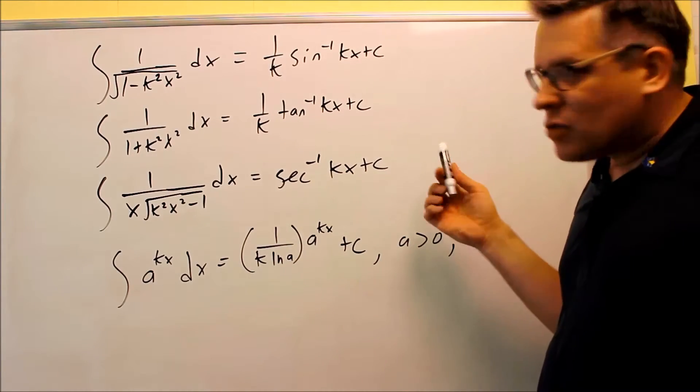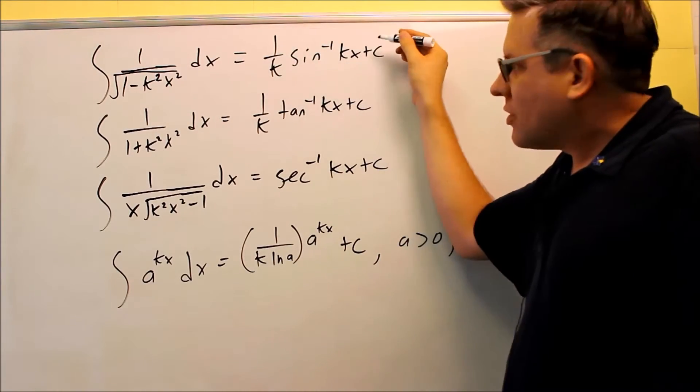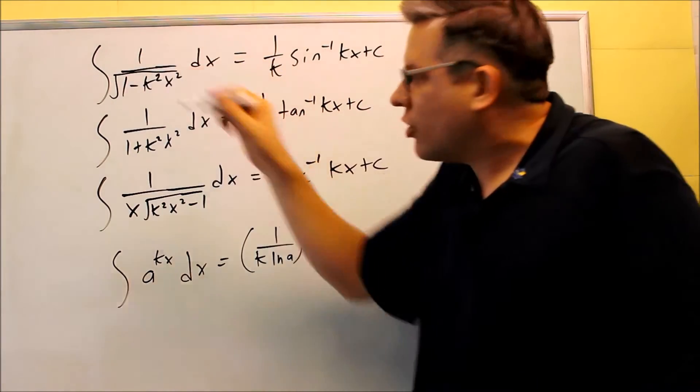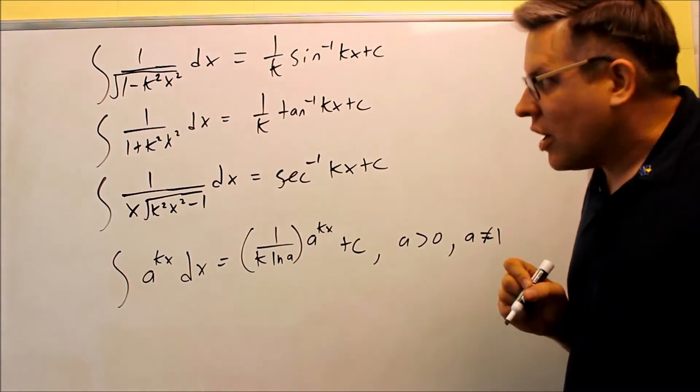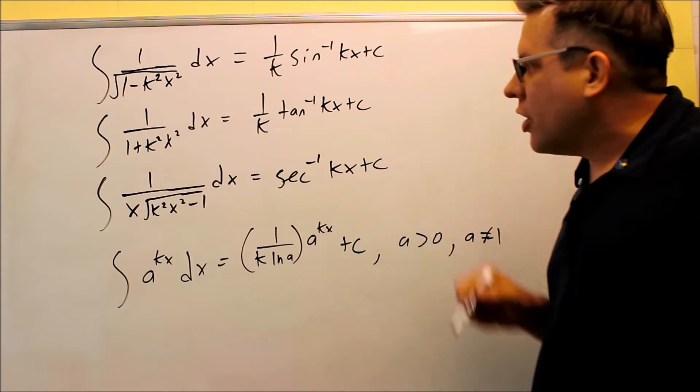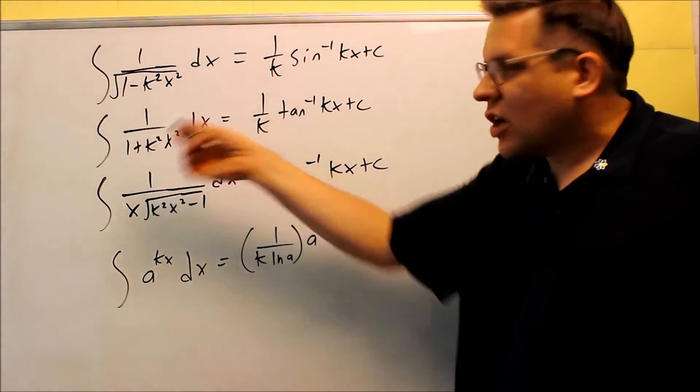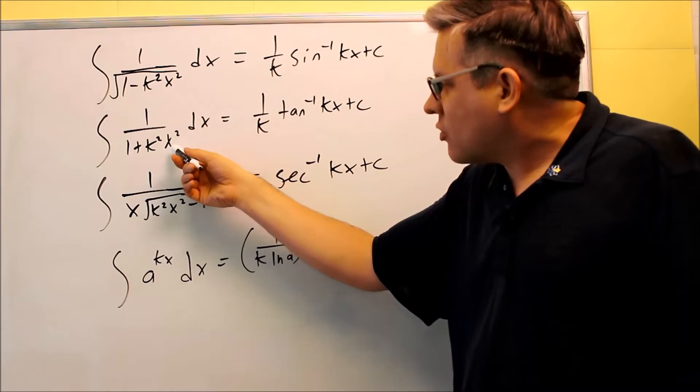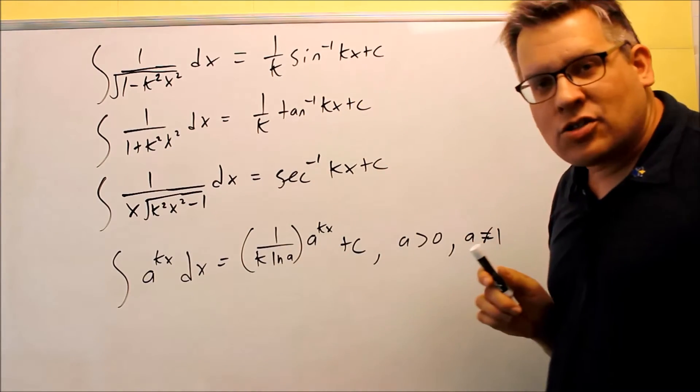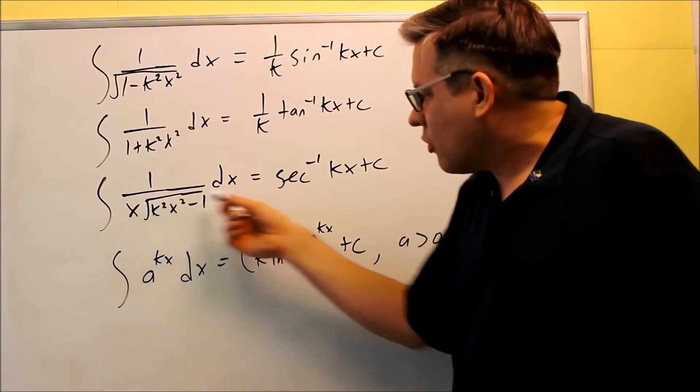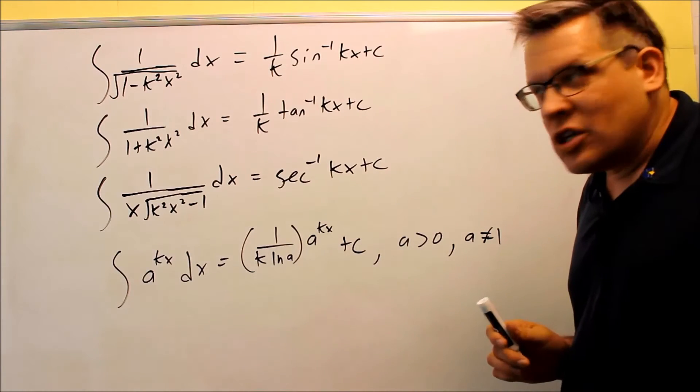So again, the reason why that works is because if you start with this side, take the derivative, that's exactly what you're going to get inside the integral sign. So we have our three here that you can see. This one does not have a square root on it. This is one plus k squared x squared turns into your inverse tangent and then this one down here will turn into your inverse secant. Notice that all these have plus c on it also.